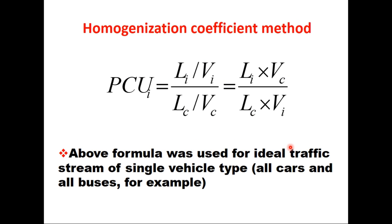The Passenger Car Unit for any type of vehicle I, according to the Homogenization Coefficient method, is given by the equation: (LI × VC) / (LC × VI), where L is the length of the vehicle, V is the speed of the vehicle, I stands for the vehicle type for which PCU is being determined, and C stands for the standard passenger car. This method was used for an ideal traffic stream of a single vehicle type — that is, either all cars, all buses, or all two-wheelers.